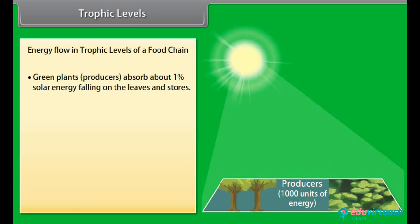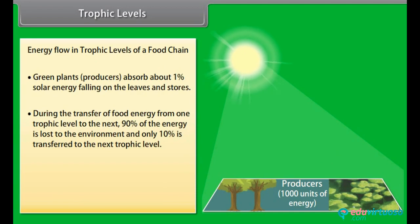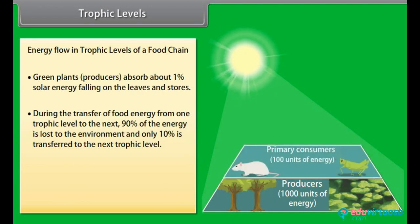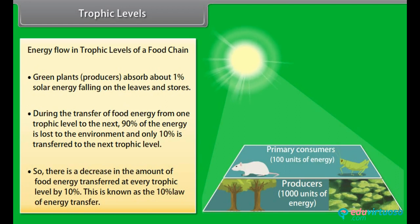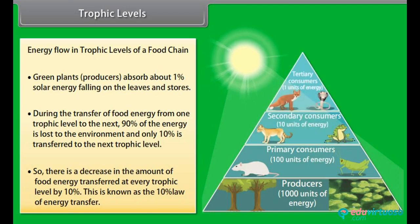Green plant producers absorb about 1% of solar energy falling on the leaves. During the transfer of food energy from one trophic level to the next, 90% of the energy is lost to the environment and only 10% is transferred to the next trophic level. So there is a decrease in the amount of food energy transferred at every trophic level by 10%. This is known as the 10% law of energy transfer.